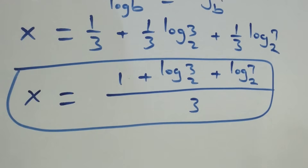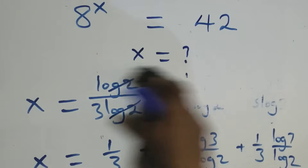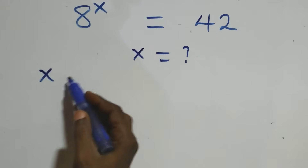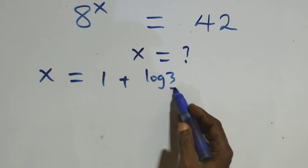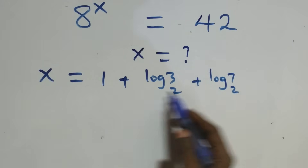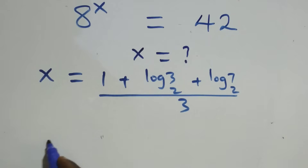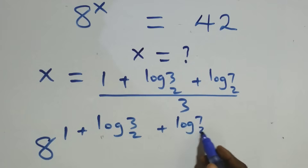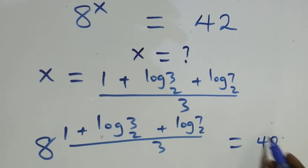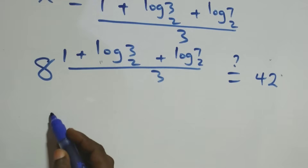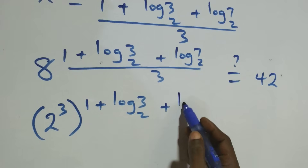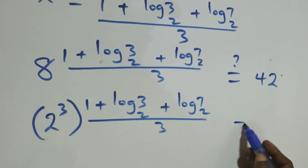Let's check if this satisfies the given problem. We substitute the value of x, which is 1 plus log 3 base 2 plus log 7 base 2, all over 3. So we have 2 raised to the power of 1 plus log 3 base 2 plus log 7 base 2, all over 3 — is this equal to 42?